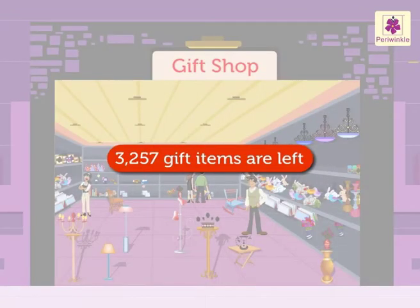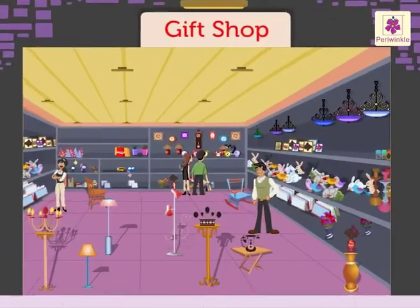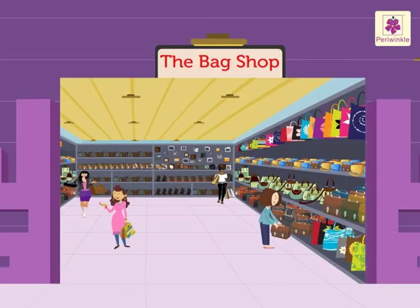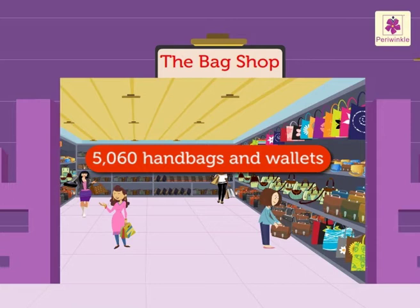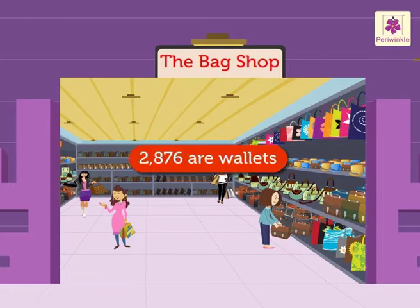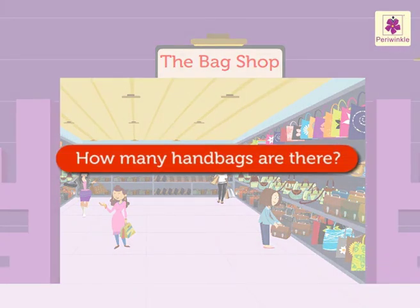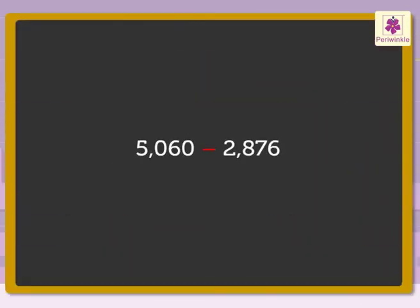Thus, three thousand two hundred fifty-seven gift items are left. Let us buy a few of them. Look, there are five thousand sixty handbags and wallets in the bags section, out of which two thousand eight hundred seventy-six are wallets. Let us find out how many handbags there are. Here we have to subtract two thousand eight hundred seventy-six from five thousand sixty to find the answer.